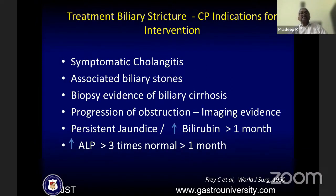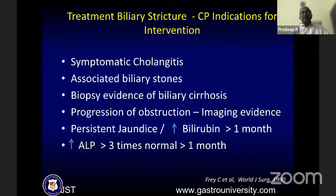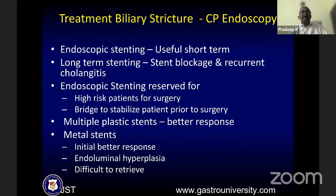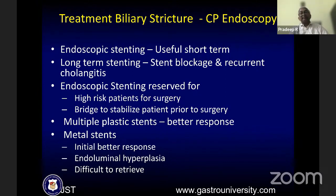Symptomatic cholangitis requires intervention, as does associated biliary stones or biopsy evidence of biliary cirrhosis. Progression of obstruction with imaging evidence, or persistent jaundice for more than one month, or alkaline phosphatase more than three times normal persisting for more than one month — these are situations where one should intervene to prevent progression to cirrhosis. Endoscopic stenting is useful short-term but not long-term, due to stent blockage and recurrent cholangitis. It is reserved for high-risk patients or as a bridge to stabilize the patient prior to surgery.